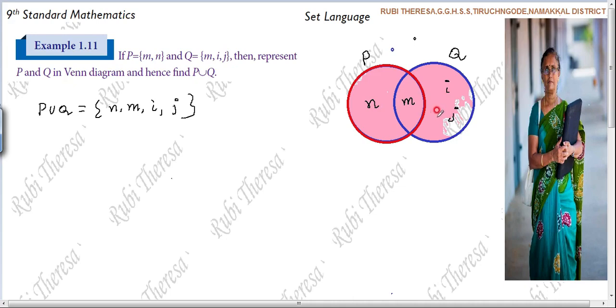P union Q. So through the Venn diagram since they asked. So one student is asking whether I have to put a rectangle or not. It is not compulsory to have. It is not compulsory to have for this problem. Why? If there is complement then compulsorily you have to write universal set. Otherwise it is not compulsory.